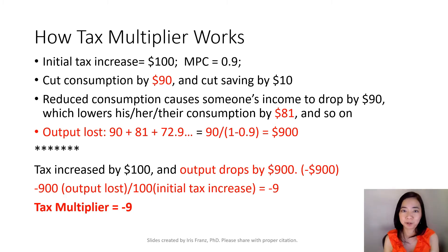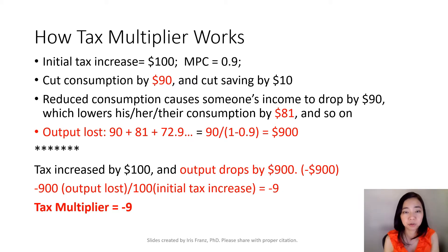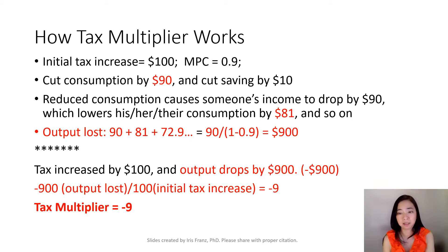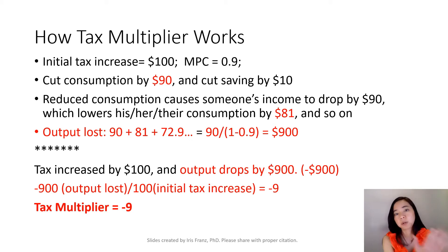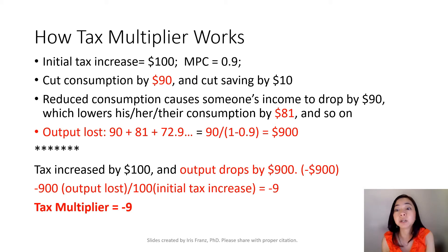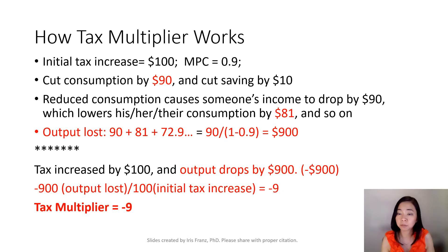Let me explain how the tax multiplier works. Suppose MPC is equal to 0.9 and the initial tax increase is $100. With this tax increase, I am going to cut my consumption by $90 — because $100 times MPC 0.9 gives you $90 — and I'm also going to cut my saving by $10. When I cut my consumption by $90, the person I would have shopped from loses income by $90.